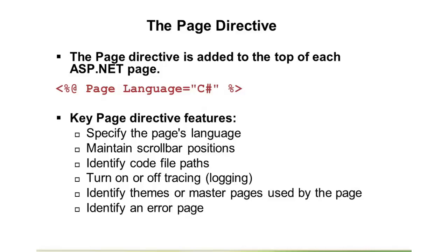Some other things you can do with the page directive include maintaining scroll bar positions. This is a big deal when you have grids and the user can click on the grid to select a row — the whole page reloads and they have to scroll back down to find that selected row. You can mitigate that with a page directive attribute in a matter of five seconds. Page directives are also used in Visual Studio to identify code separation files, so code file paths are identified.